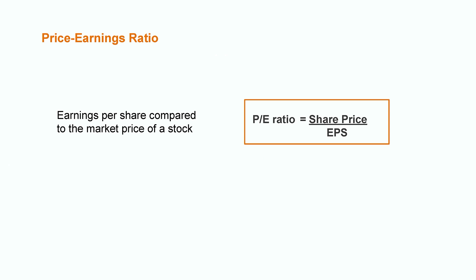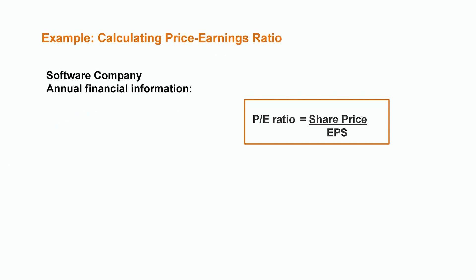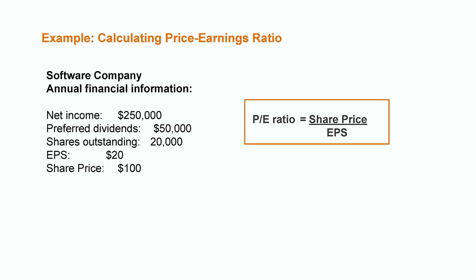As a result of these limitations, financial analysts and investors sometimes compare earnings per share with the market price of a stock. This is called the price-earnings ratio, calculated by taking the price each share is selling for in the market and dividing by the earnings per share figure. Returning to our software company example where EPS was $10 per share — if the share price was $100, we divide $100 by $10 for a price-earnings ratio of 5. This tells us the stock is currently selling for five times earnings and can be used as a comparison when looking at other investments.